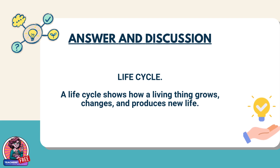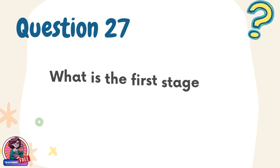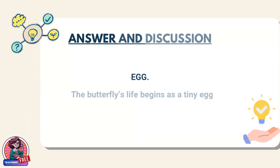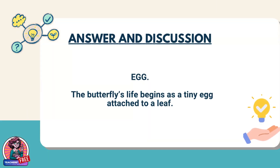Question 27. What is the first stage of a butterfly's life cycle where it begins its growth? Answer: Egg. The butterfly's life begins as a tiny egg attached to a leaf.